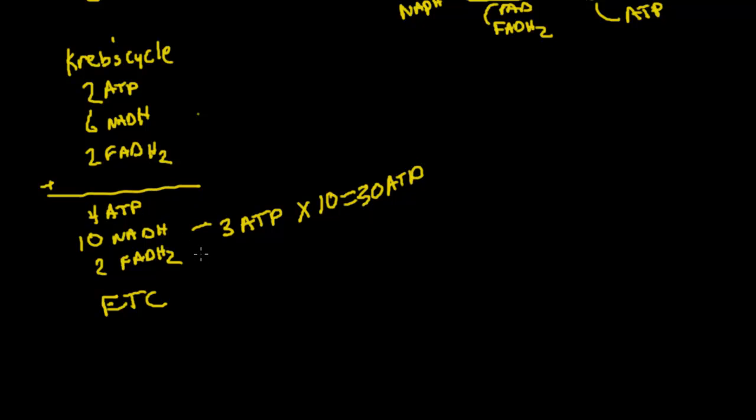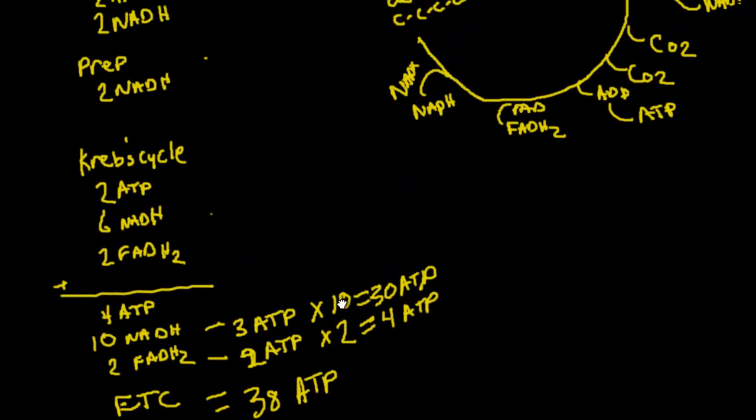And so for these two FADHs, we're going to get 2 ATP for each one. So that would be times 2, which gives us 4 ATP. So that gives us 38. So after the electron transport chain is finished, we get 38 ATP total. Now let's go back in and find them so that you can understand where they're coming from.